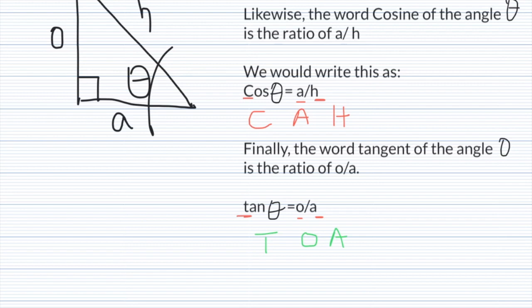Likewise, the word cosine of the angle θ is just the ratio of the adjacent side divided by the hypotenuse. We would write this as cosine of the angle of interest θ equals A/H. C-O-S, which looks like cos, is pronounced cosine. So cosine of θ equals adjacent divided by hypotenuse.